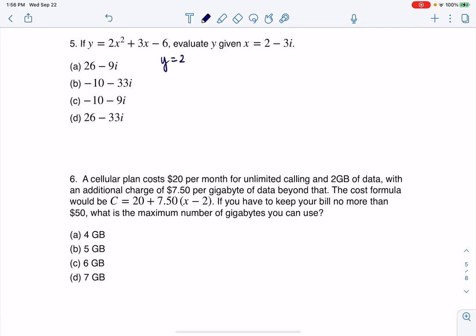So I will have y equals 2 times—and we're going to go with 2 minus 3i—I'm going to have to square that, plus 3 times 2 minus 3i minus 6.